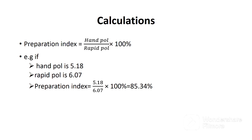The formula used to calculate preparation index is: Preparation Index = (Hand Pole / Rapid Pole) × 100%. For example, if our hand pole is 5.18 and our rapid pole is 6.07, the preparation index will be equal to (5.18 / 6.07) × 100%, which equals 85.34%.